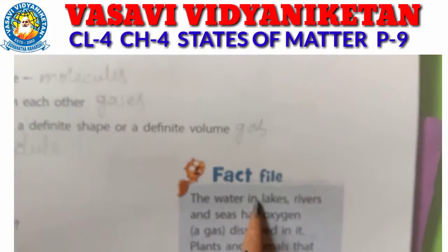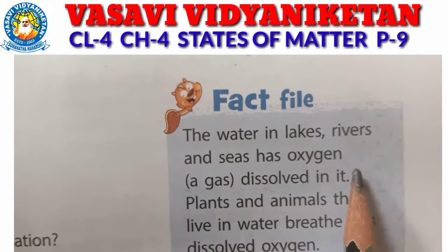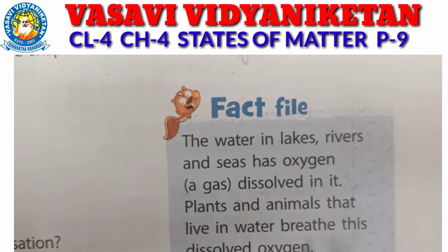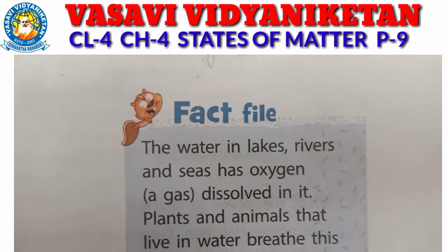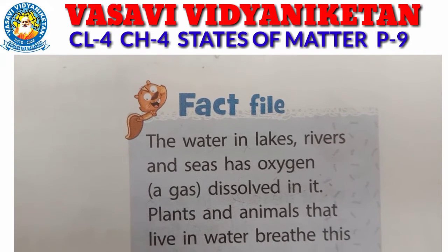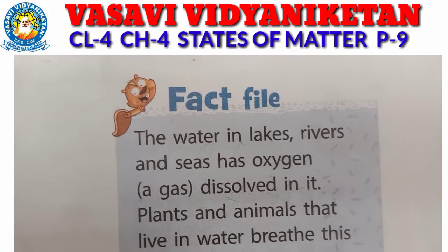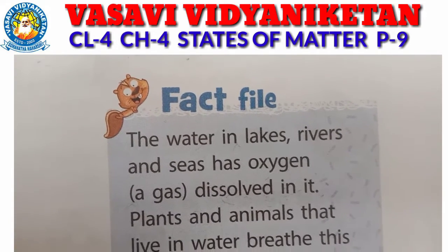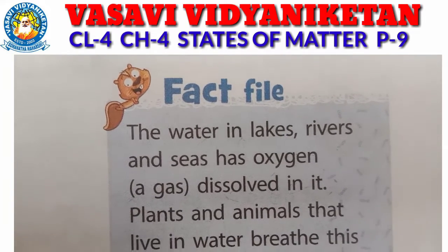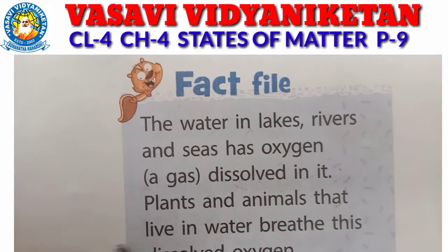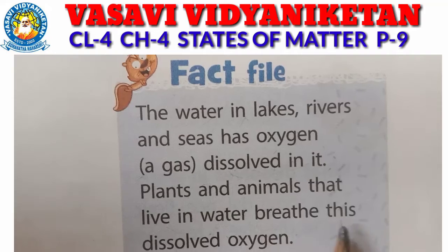Next, fact 5. The water in lakes, rivers and seas has oxygen dissolved in it. Oxygen is the chemical name of the air. So plants and animals use this dissolved oxygen.